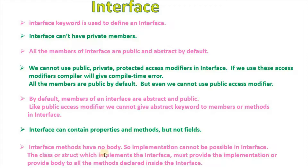Interface methods have no body, so implementation cannot be done inside the interface. The class or struct which implements the interface must provide the implementation — that is, provide a body — to all the methods declared inside the interface.